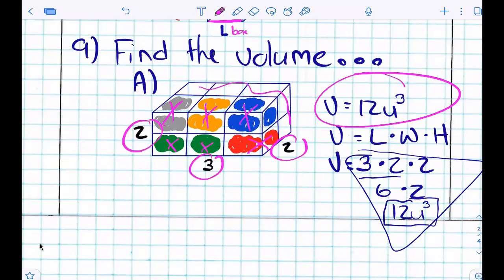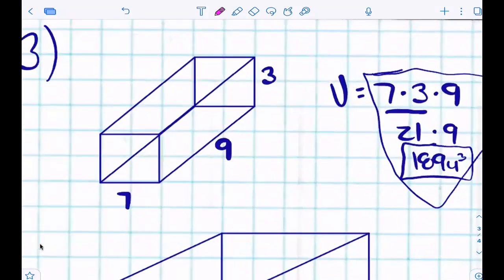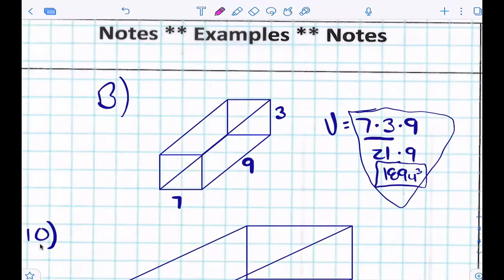...length times width times height? What's three times two times two? Three times two is six, six times two is twelve. Yep. So either one works. But on this guy right here, did they give you the cubes?